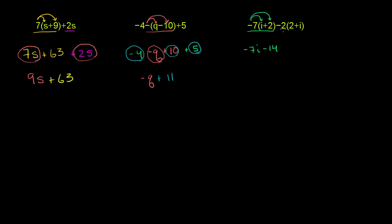And then we have negative 2. So this is negative 2 times the quantity 2 plus i. So that's times 2, and then that's times i. So negative 2 times 2 is negative 4. Negative 2 times positive i is negative 2i.